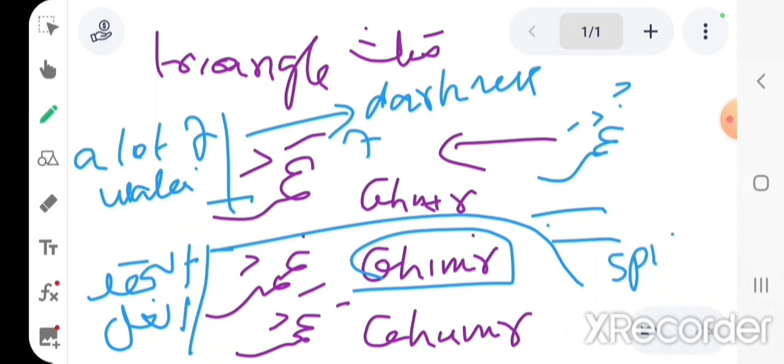Ghimr, or in English can be spite or rancor, that's what the ghimr is. And ghamr is a person without experience.